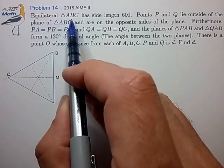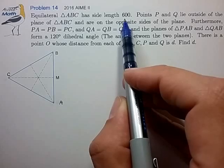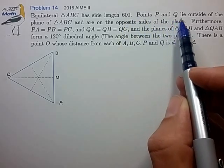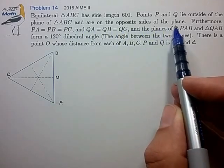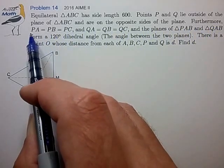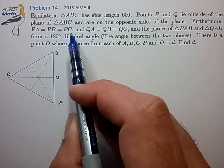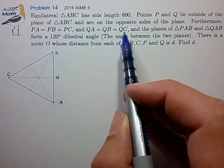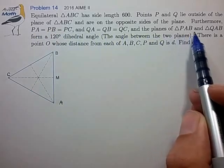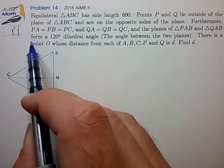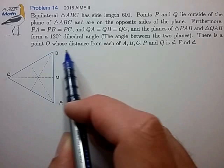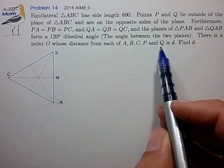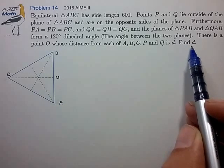Equilateral triangle ABC has side length 600, and points P and Q lie outside the plane of ABC and are on opposite sides of the plane. Furthermore, point P is equidistant from A, B, and C, Q is equidistant from A, B, and C, and the planes PAB and QAB form a 120-degree angle. There is a point O whose distance from each of these five points is the same distance d. Find the distance d.